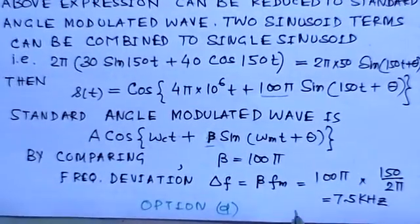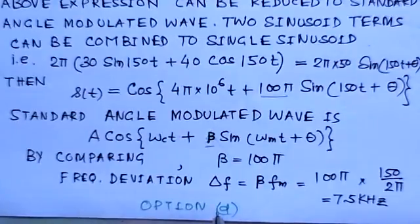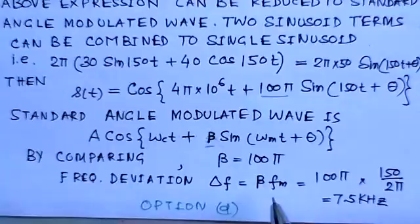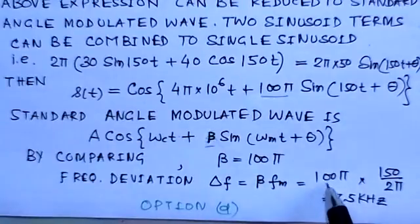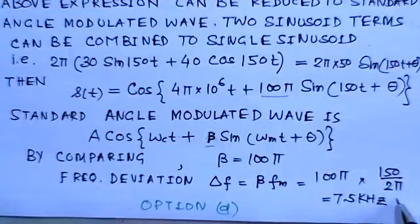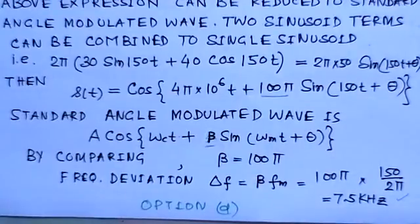And frequency deviation could be written as Δf = β × fm = 100π × 150/2π = 7.5 kHz. So this is corresponding to option d here in this problem.